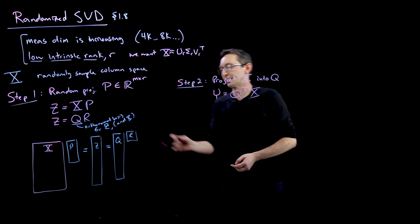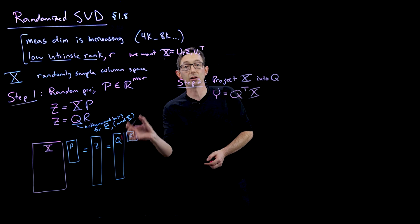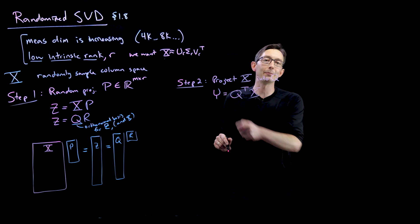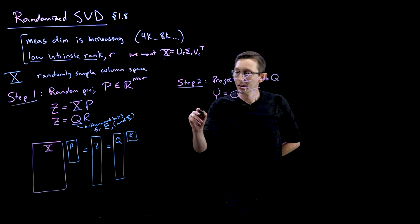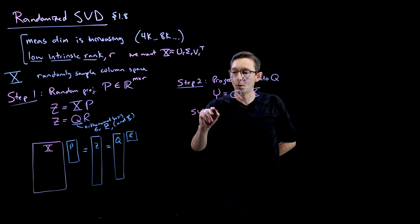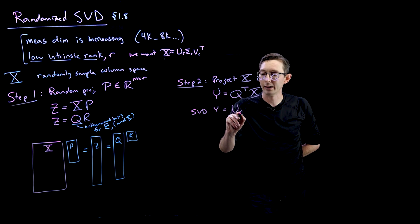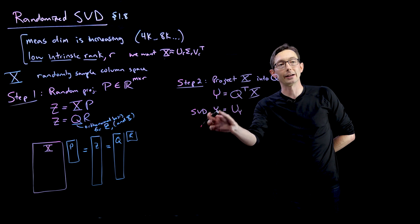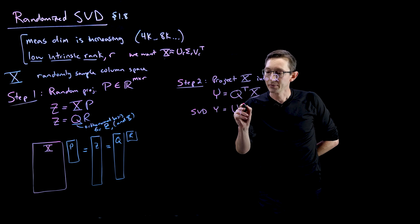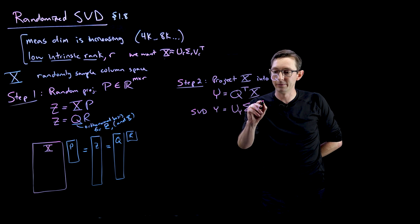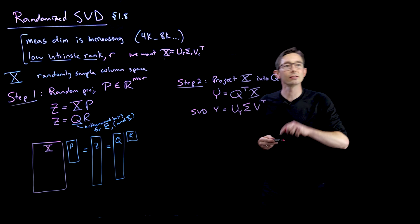Now this is much lower dimensional. It's going to have a really small dimension R. And now we're going to compute the SVD of this Y matrix. So now we compute the SVD of Y equals, and I'm going to write this as U sub Y. These are the left singular vectors of the Y matrix. Sigma sub Y and V sub Y transpose.